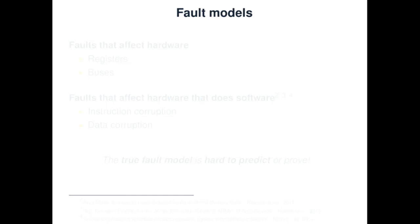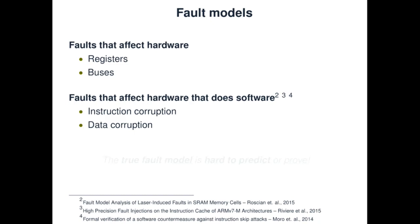Using fault injection, we can generate different types of faults, and we like to classify these in two different groups. One group being the faults that affect hardware, and one group being the faults that affect hardware that does software. For example, in the first group you can think of modifying register values or modifying data whilst in transit over internal dedicated buses. The second group is really targeting the subsystem responsible for executing software — so instructions getting corrupted or data handled by these instructions getting corrupted.